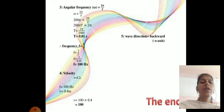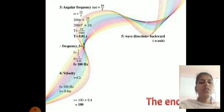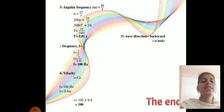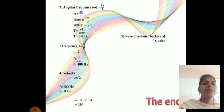Velocity v = f × λ = 100 × 0.4 = 40 m/s. The wave is travelling in the backward (negative x) direction.